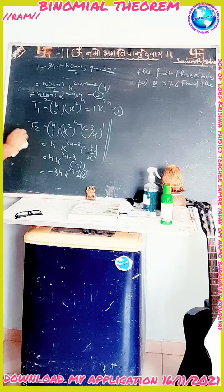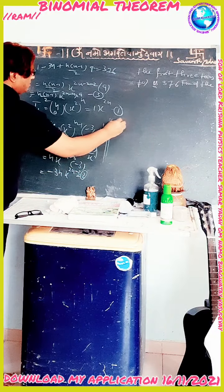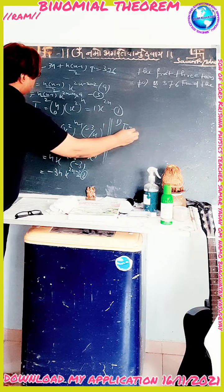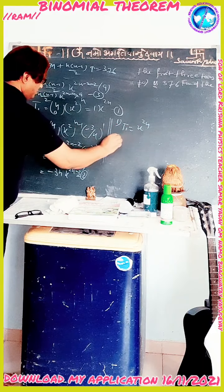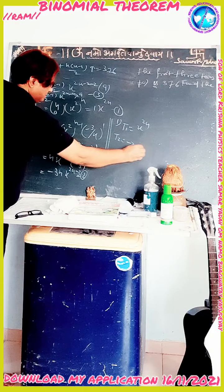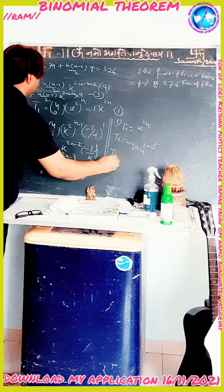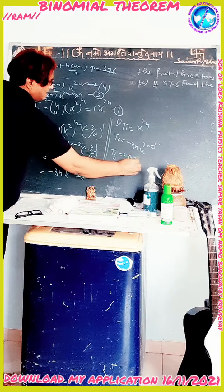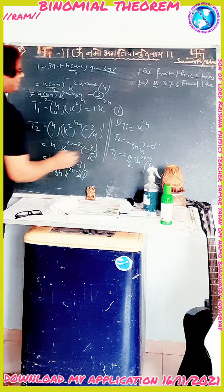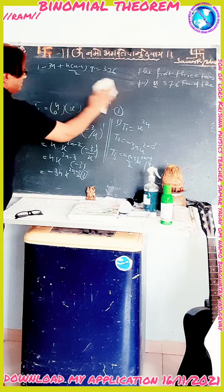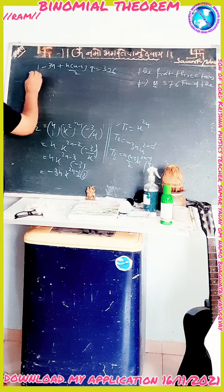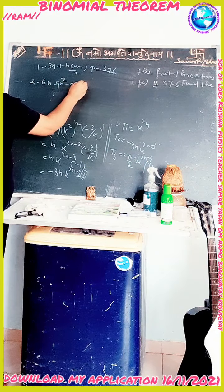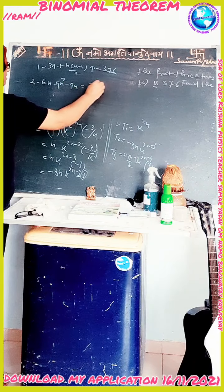Multiplying through by 2: 2 − 6n + 9n² − 9n = 752. Simplifying: 9n² − 15n − 750 = 0. Dividing by 3: 3n² − 5n − 250 = 0.